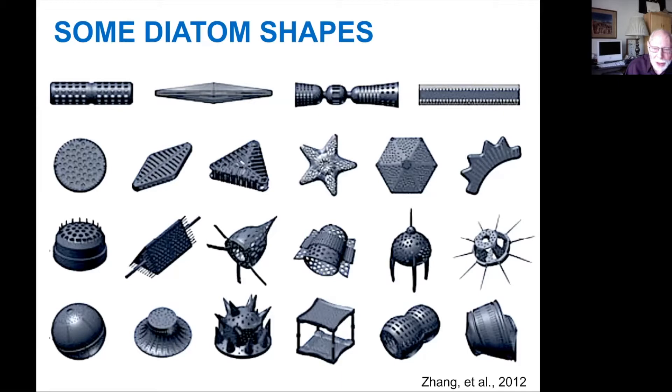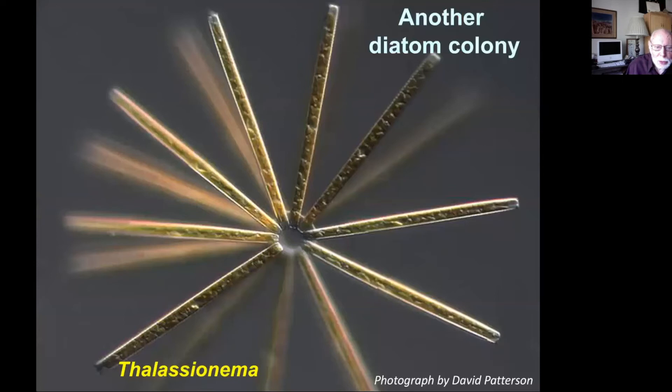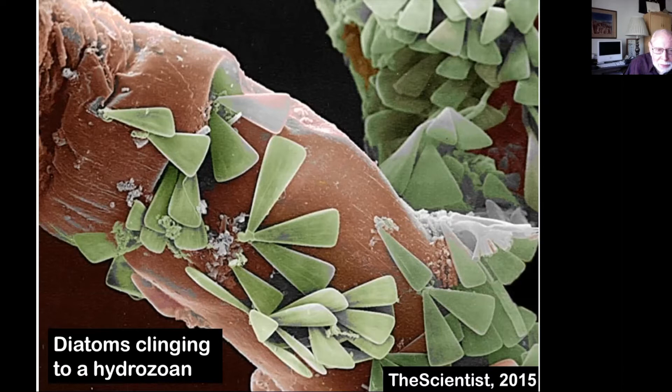Some diatoms form colonies, probably to reduce predation by grazing, and some of these colonies are really spectacular. Not all diatoms are planktonic — there are some that live on rocks or shells. Whales commonly have dense growths of diatoms on their skin. They occur both in marine and fresh water; in fact, they occur just about wherever there's water, from the open sea to lakes and ponds, to wet mud, to the damp low areas of an otherwise barren desert.